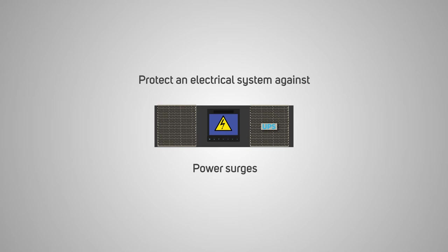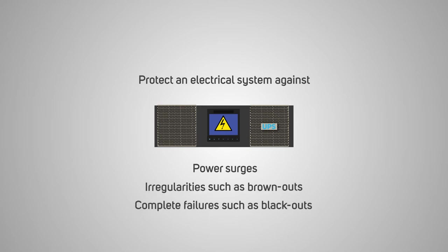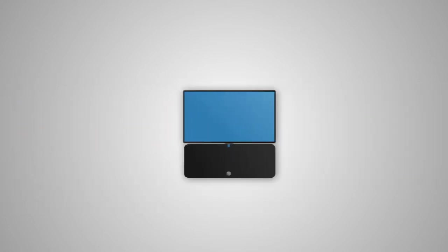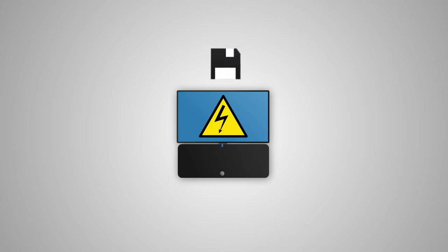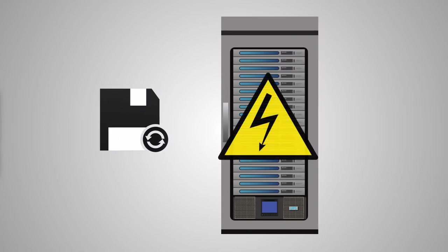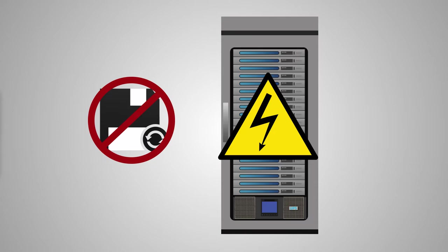Although all infrastructure components should be connected to a UPS, the requirements of each piece of hardware will be different. The most basic function of a UPS is to protect an electrical system against power surges, irregularities such as brownouts, and complete failures such as blackouts. If you imagine a PC that suffers a sudden power loss, it may be that you lose the latest version of your documents — annoying, but mostly an inconvenience. Now imagine how much worse things would be if the server that backs up the documents from your PC goes down due to a power failure — a sudden power loss would be catastrophic.